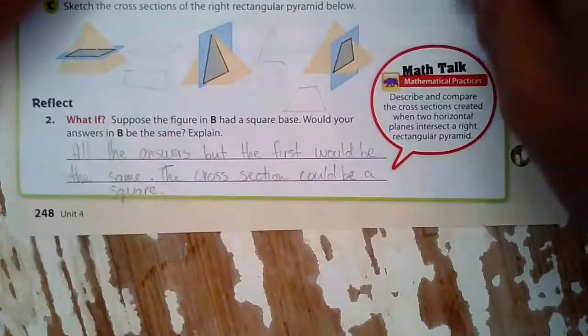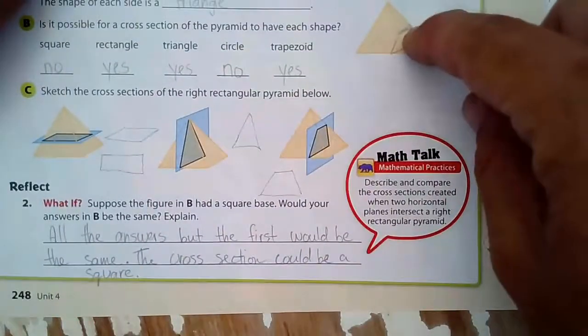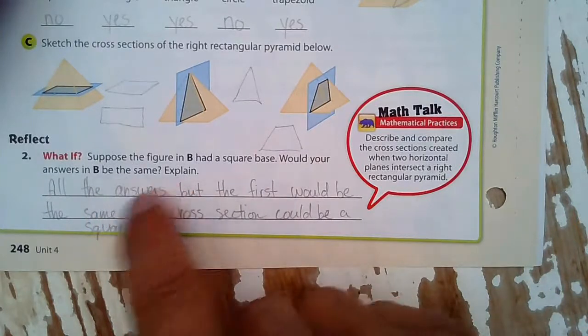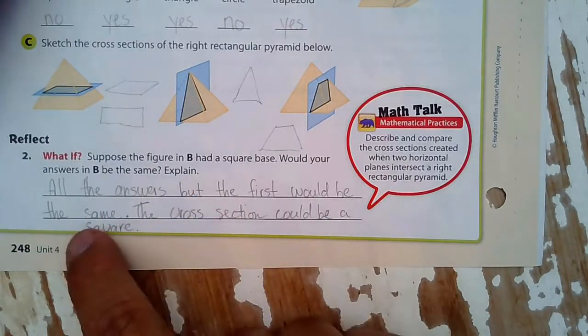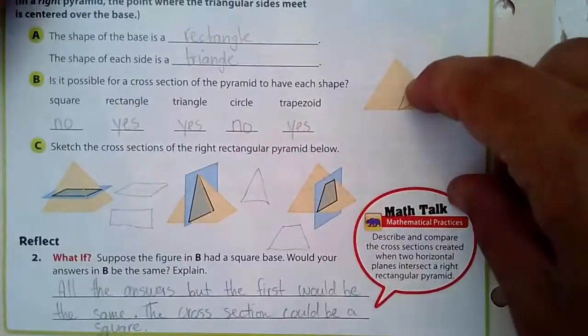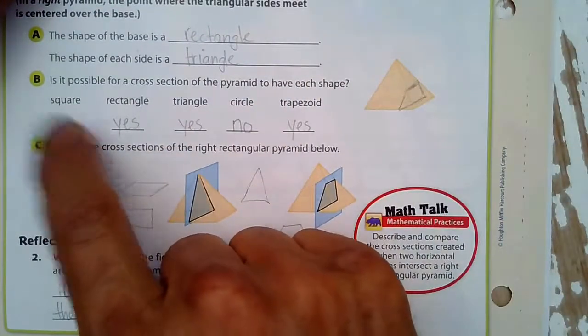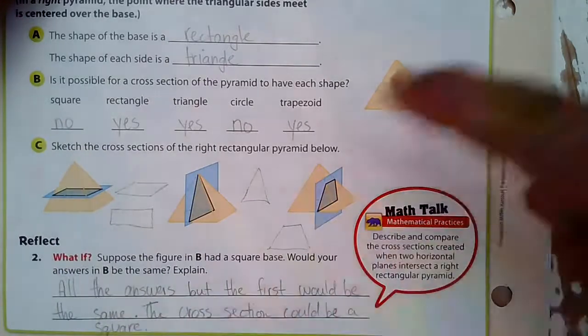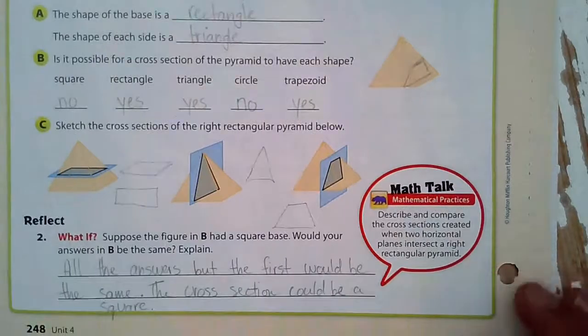Suppose in figure B right there had a square base. Would your answers in B be the same? All the same, but the first would be the same. The cross section would be a square. And I was mentioning that earlier, if that bottom was a square, then I could get a square for a cross section. I would just slice it horizontally. And that's what you got to know about cross sections.